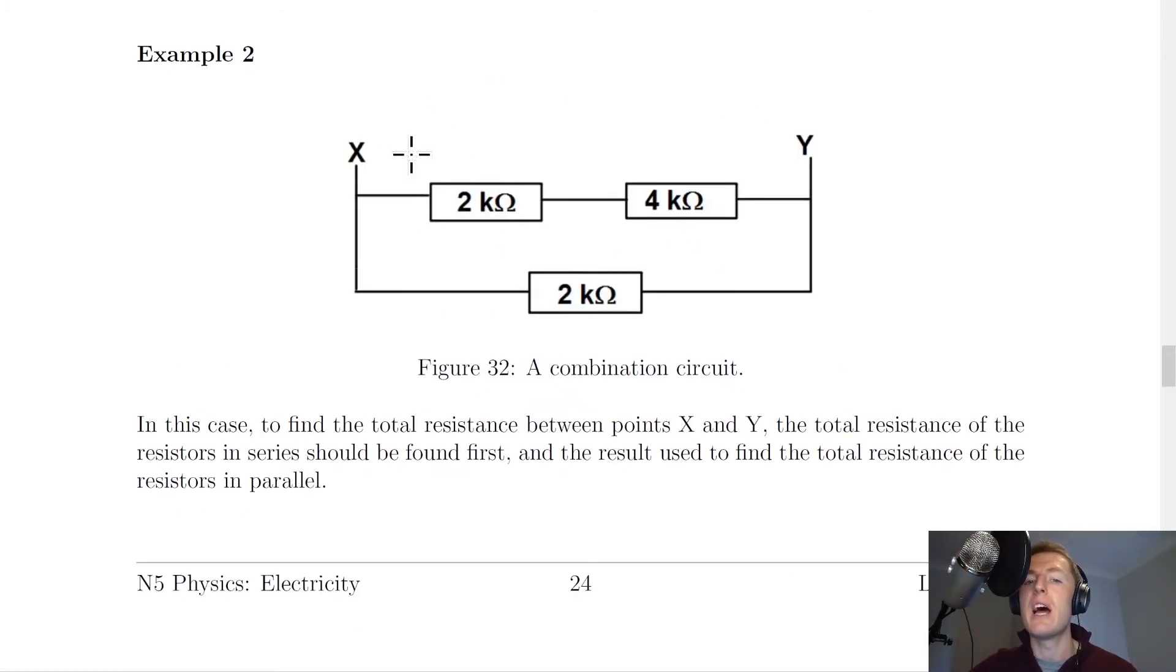In this second example, however, let's say we have two resistors in series here on this branch, so a 2000 ohm and a 4000 ohm resistor, and then a 2000 ohm in parallel with that series combination.